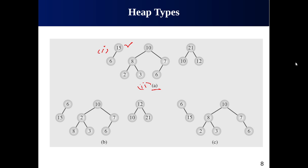Second example: more levels and nodes. The shape is okay — 10 has two children, 8 has two children, 7 has one left child. Checking the heap property: 8 is greater than 2 and 3; 7 is greater than 6 (which is 5); root 10 is greater than 8 and 7. The largest value is 10 at the root. This satisfies both properties — it is also an example of a heap.